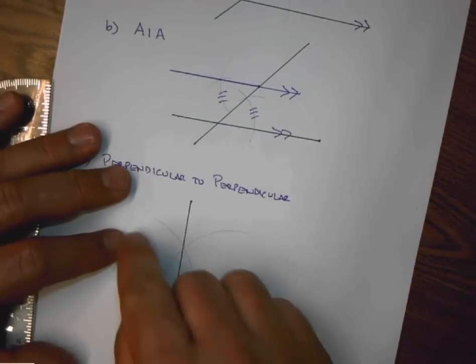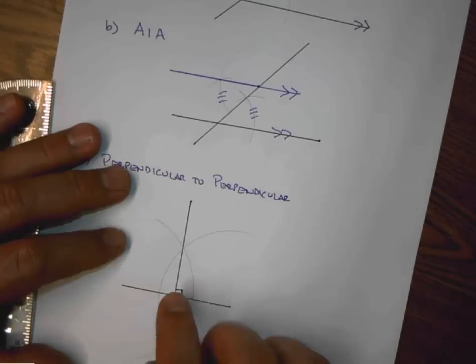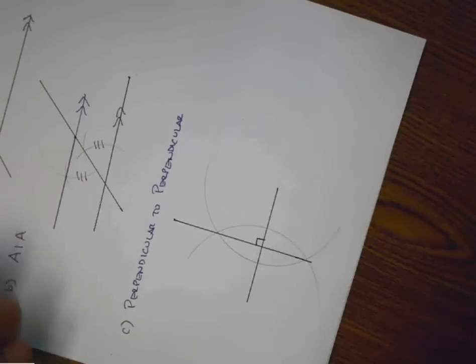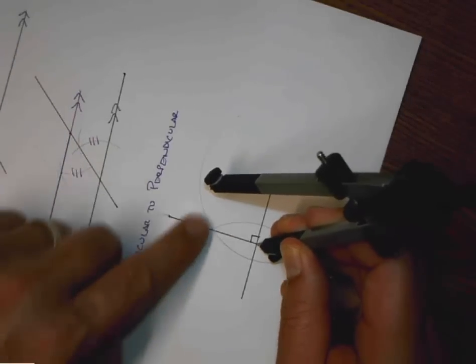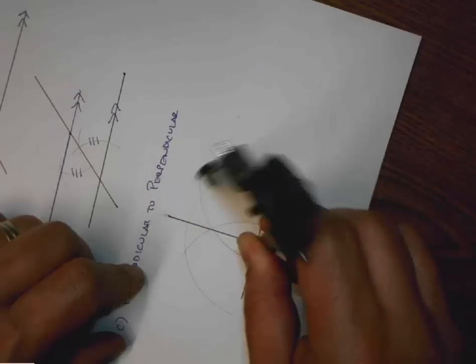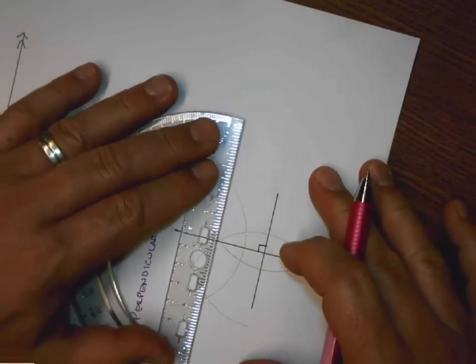And now, I want to construct a line up here that is parallel to this line. Well, if these two are perpendicular, and I turn my paper this way, I should be able to construct a line that is perpendicular to this one. And if it's perpendicular to a perpendicular line, it should end up parallel to the original.